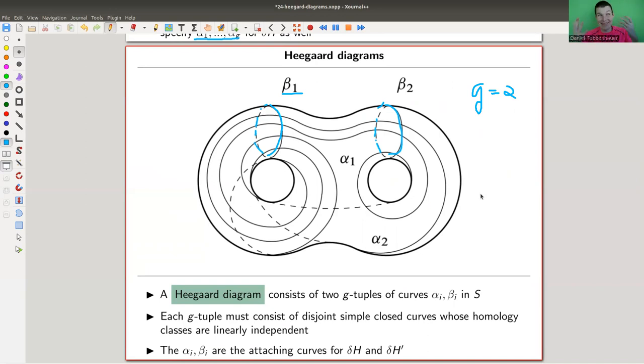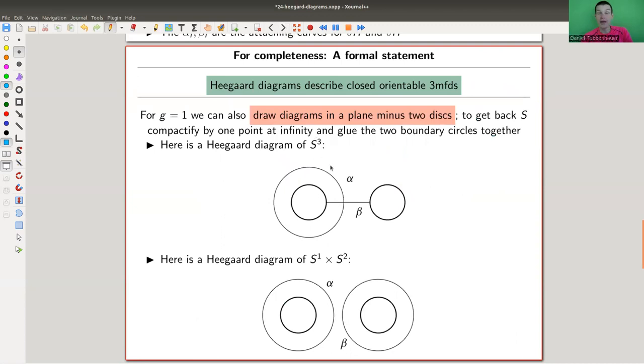And the only restriction is, because otherwise the gluing is a little bit stupid, that they kind of are linear independent in a certain way. If you know what homology is, then they form kind of a set of linear independent curves in homology. Otherwise, the gluing will be a little bit degenerate. And we don't want that. Okay. But it's a pretty simple picture. So you just draw a genus G surface and two times G curves on it. The alpha curves and the beta curves, which are the attaching curves for the handle bodies that you would like to glue together. And yes, so the Heegaard diagrams describe exactly this Heegaard operation, the Heegaard splitting.